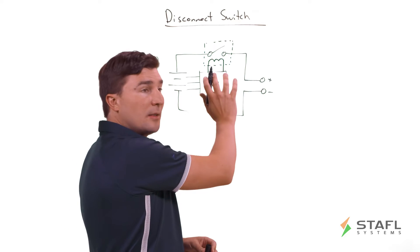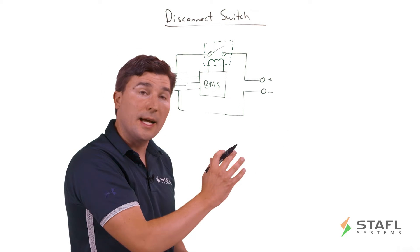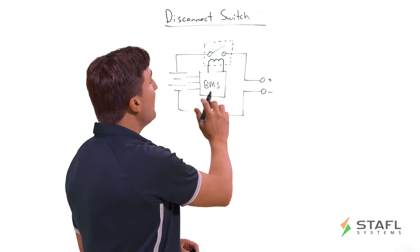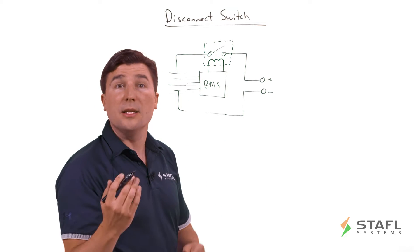Then the BMS will communicate to the overall application system controller that something's wrong. Perhaps it'll say no more current flow, I'm overheated, or it'll indicate via some sort of light or something like that. But fundamentally, the BMS needs the ability to interrupt current flow to prevent the pack from getting into a worse condition.